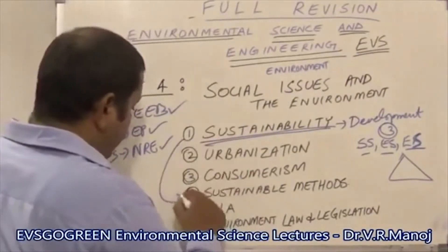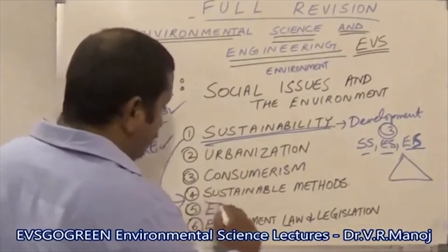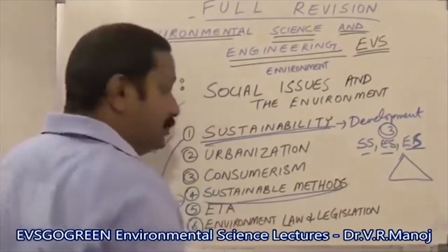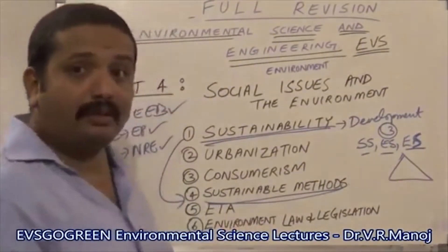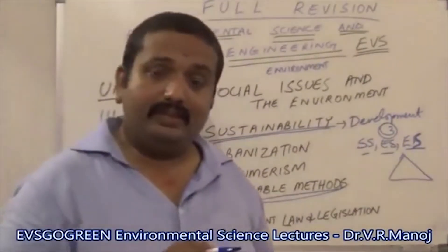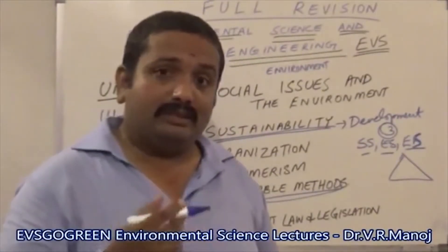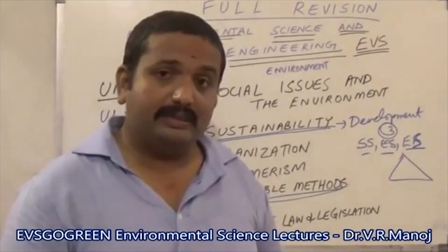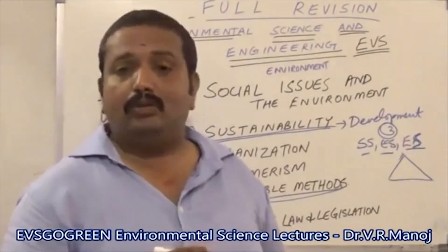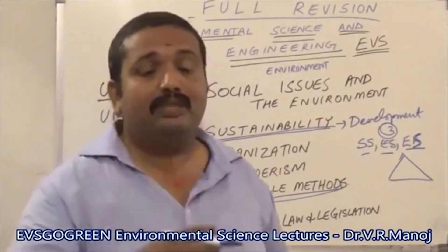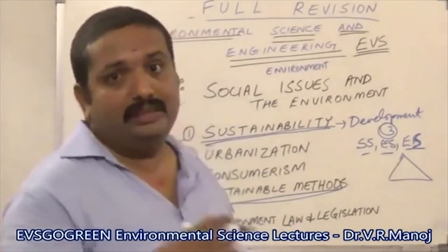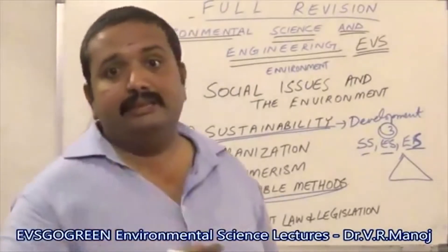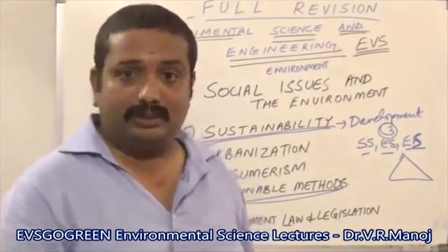When you talk about Sustainability, you should also be aware of the Sustainable Methods. Some of these methods you have come across in Unit 3 where you will conserve Natural Resources. For example, conservation of Water Resources involves Sustainable Methods such as Rainwater Harvesting or Watershed Mechanism. Those are two examples of very good Sustainable Methods which lead to the Sustainable Development of Water Resources.